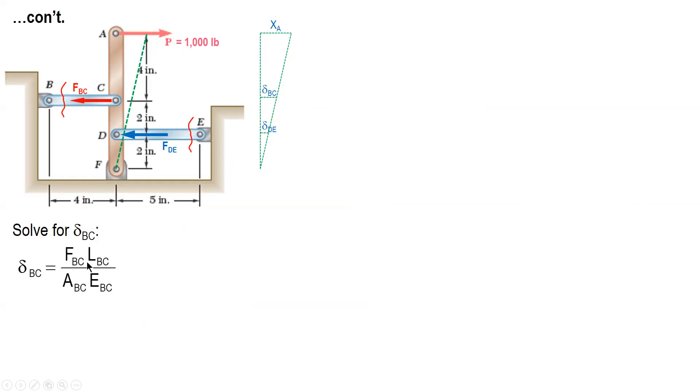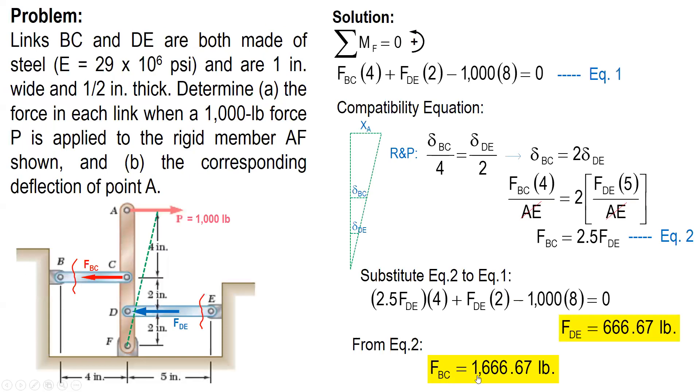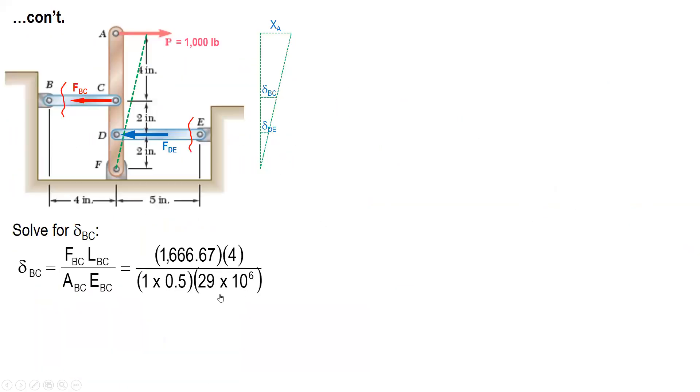Let's solve for delta BC. The formula is FBC times length over cross-sectional area and modulus of elasticity. FBC is 1,666.67. The length is 4 inches. The area is 1 inch by 1 half or 0.5 inch. And then modulus of elasticity, 29 times 10 to the 6. This is the elongation of link BC: 4.598 times 10 raised to negative 4 inches.